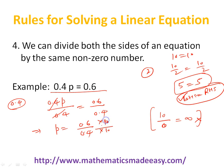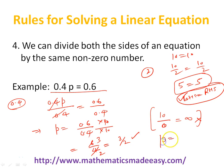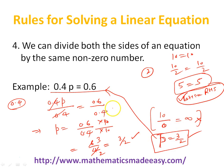We will multiply by 10 in the numerator and denominator, so this will become 6 by 4, and simplified it becomes 3 by 2. So p equal to 3 by 2 is the solution of this linear equation. The rule is that we can divide both sides of an equation by the same non-zero number.